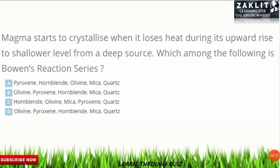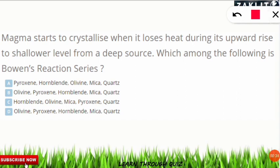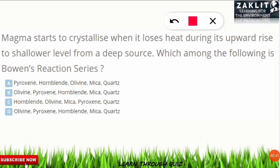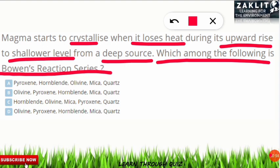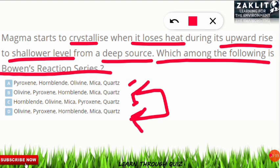This type of question comes from Bowen's reaction series. A question from the NET 2017 examination asks: magma starts to crystallize when it loses heat during its upward rise to shallower levels from a deeper source — which among the following is the correct Bowen's reaction series? The correct answer is both B and D, as they have the same option, which was a mistake from the NET exam.